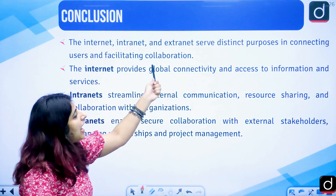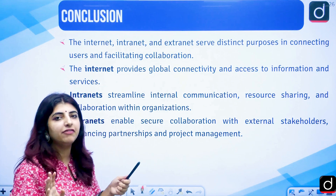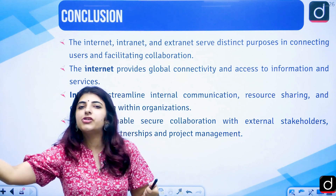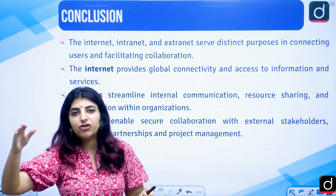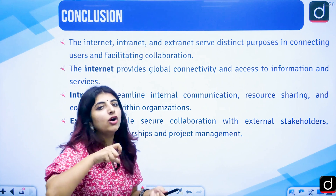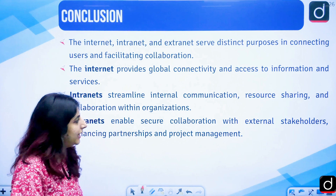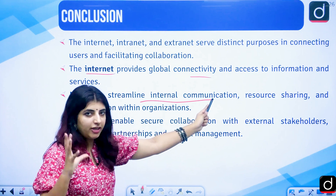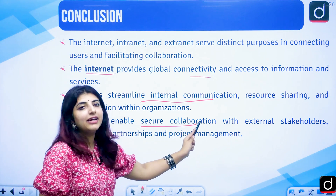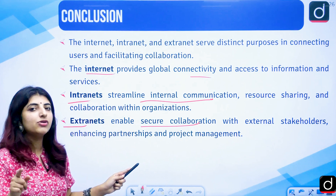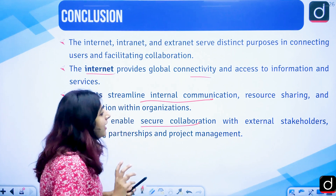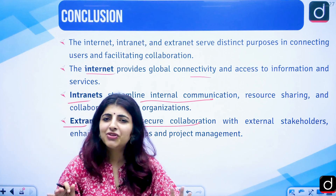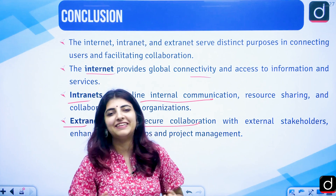These three serve different types of purposes. Internet works globally. Extranet works with external users who are not part of the organization. Intranet works within the organization for internal authorized employees. Internet provides global connectivity; intranet handles internal communication; and extranet enables secure collaboration with external partners trying to connect with your organization. I hope the entire confusion about intranet and extranet is now clear to you.